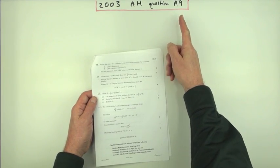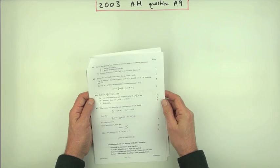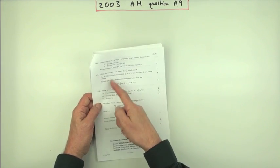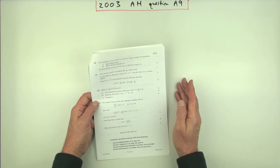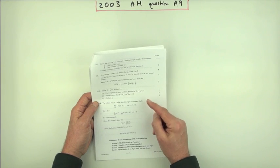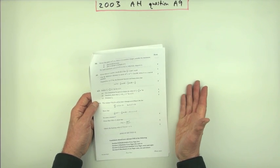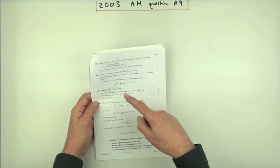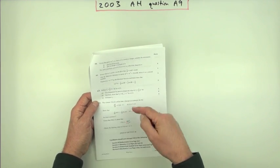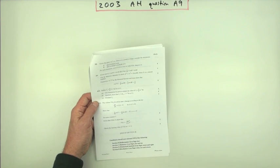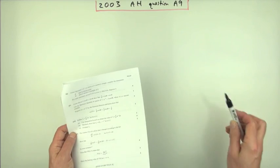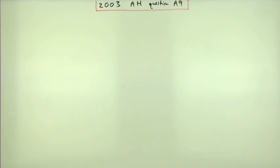So question A9 from the 2003 advanced higher. Now this might look a little bit strange. You've done complex numbers and you see this thing here — it's got W's in it, and these things about W's with negative indices, one over W's. Before I actually do this question, just a little mention of these things.